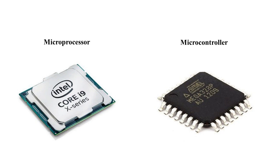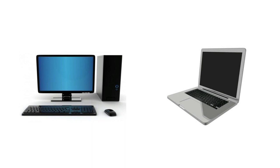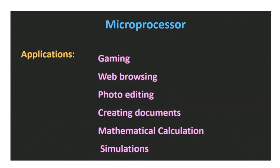The classic example of a microprocessor application is a personal computer or laptop. Using a laptop, we can do a lot of things — gaming, web browsing, photo editing, creating documents, mathematical calculations, simulations, or media streaming. So the microprocessor is basically used in applications where the task is not predefined; it depends on the user, or where intensive processing is required.